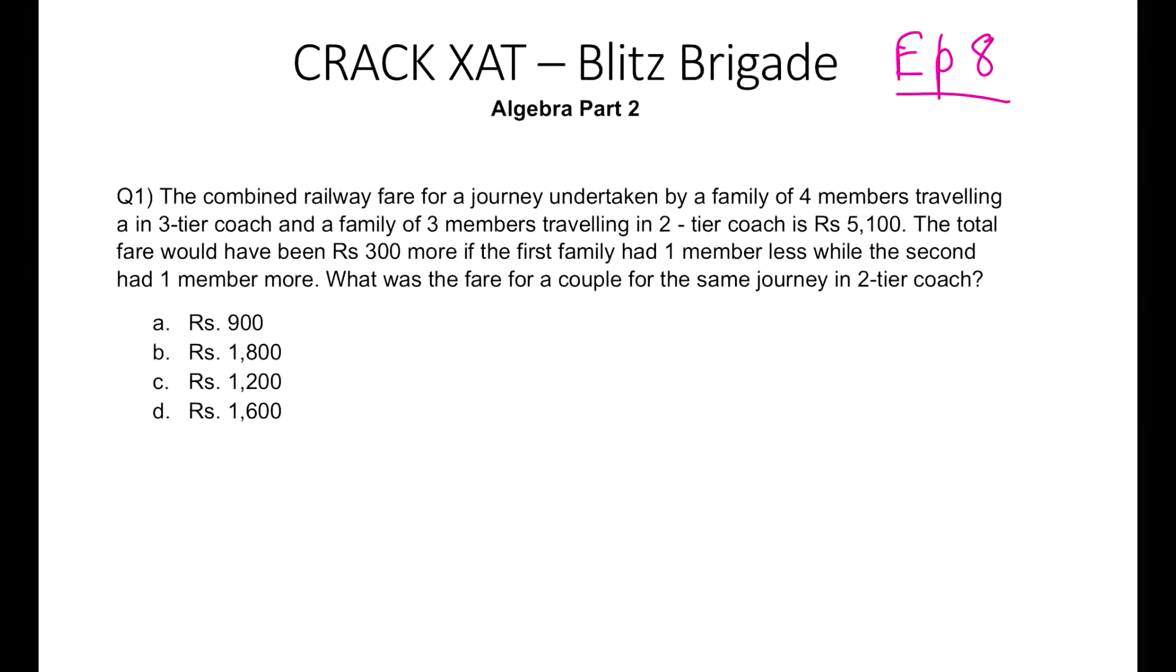The question says that the combined railway fare of a journey undertaken by a family of four members in a three-tier coach and a family of three members in a two-tier coach is given to you. So you can understand that we have two simultaneous equations here. Let us start assuming that the fare of one ticket in a three-tier coach would be rupees X and for a two-tier coach will be rupees Y.